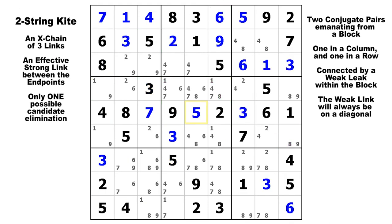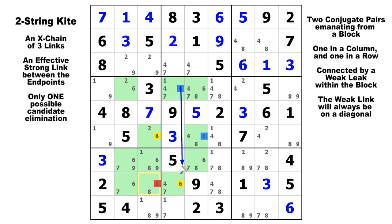On candidate six, we've got a strong link in column four and a short strong link in row six. The two conjugate pairs connect in block five, and the elimination candidate is in row eight, column three — the same row and column as the two yellow sixes. That candidate six is false because it can see both endpoints. There's your two-string kite, and I think that's enough examples for today.